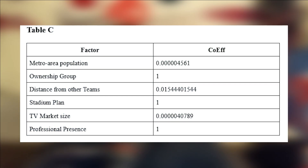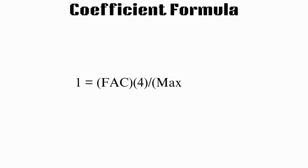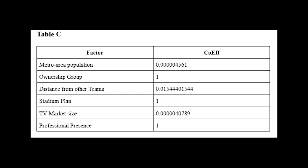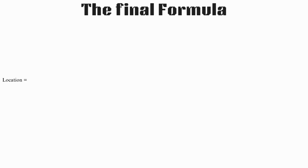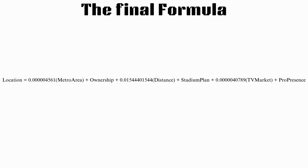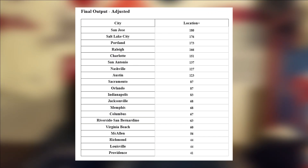The coefficients being used in the formula are shown on screen now. Because of the dummy variables, stadium plan and ownership need to be assigned a maximum value; they receive a coefficient value of 1 since there are only two possible values for these two variables. To calculate their values added to the formula, we reverse the equation where max variable is now the unknown and coefficient equals 1. Now that the coefficients are all calculated, the final formula for determining the two expansion teams is on screen now with an output labeled 'location.' The output will be adjusted to a 100-plus scale used in baseball metrics — similar to OPS+, where any integer above or below 100 represents a 1% deviation from the average.